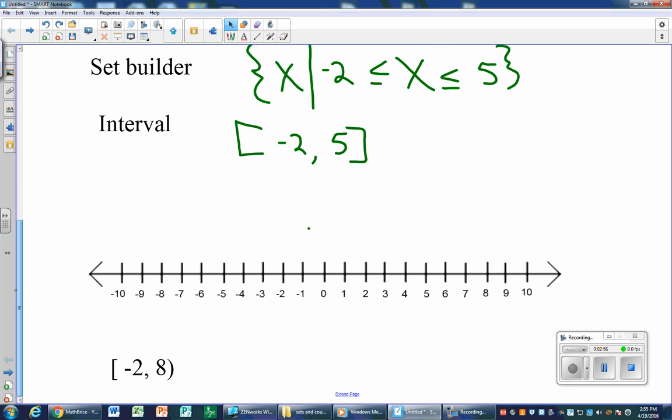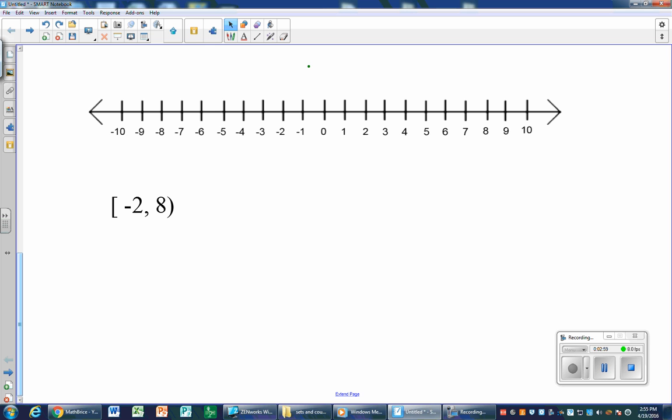Now let's take a look at one more question. Now we have to graph it. What do we know? I know that negative 2 is an important number, and I also know that positive 8 is an important number. So I see that negative 2 has to be filled in.